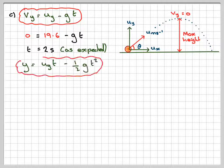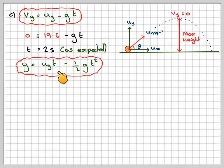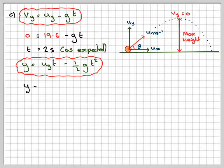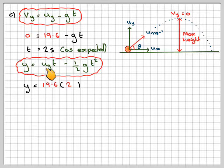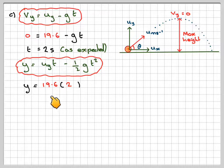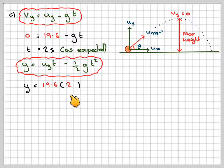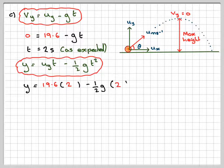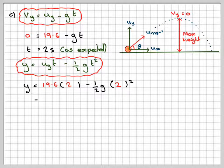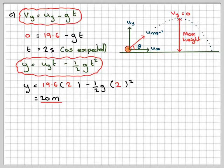But to find the actual height, is that we'll put that two into here with my vertical component of the velocity that I just calculated in the previous part. So it's 19.6 times two minus a half times g times two squared. And that will give me exactly 20 metres.